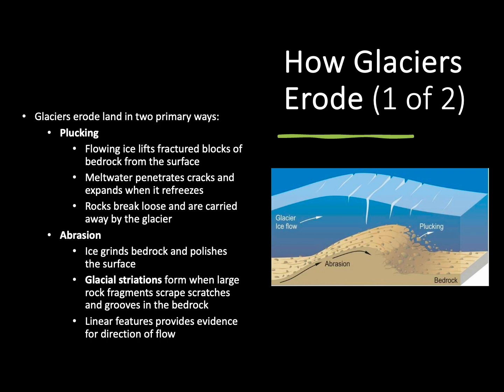Our second type of erosion is called abrasion. This is where smaller pieces of rock in the ice polish down a surface, like we saw in the last slide. If it's larger pieces of sediment that have been eroded, we're going to leave glacial striations — those parallel scratches in the surface of a rock. Depending on which direction those striations are going, it can tell us which direction that ancient glacier flowed. So if we see parallel marks going towards the south, this tells us the glacier was flowing southward.